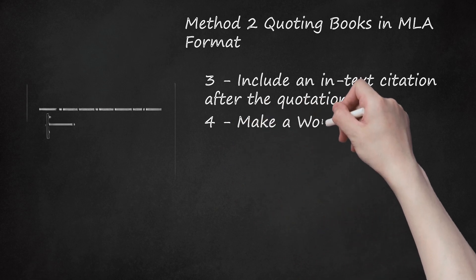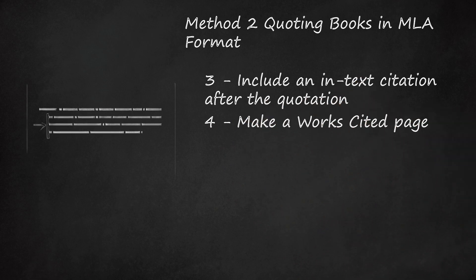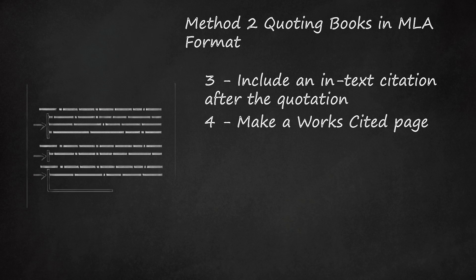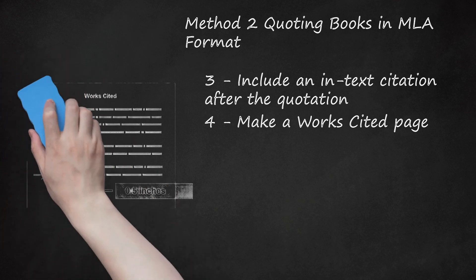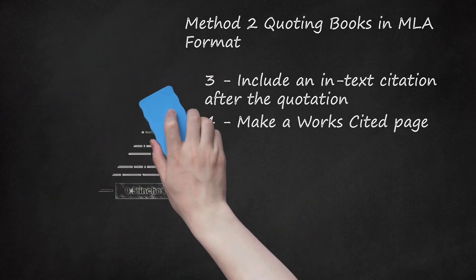Step 4: Make a works cited page. This should begin on a separate page at the end of your research paper or essay. Label it "Works Cited" in centered, non-italic text without quotation marks at the top of the page. Double-space the page but do not skip spaces between citations. Do not indent the first line of each citation, but indent all subsequent lines by 0.5 inches from the left.